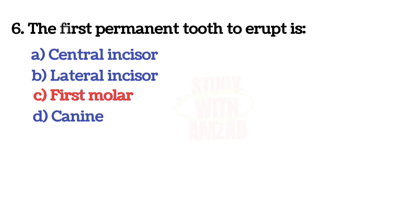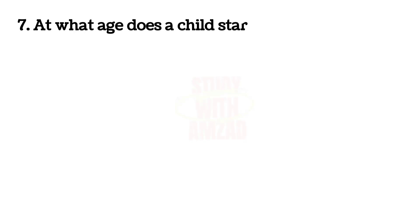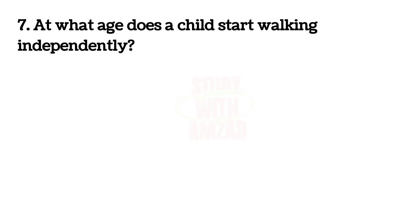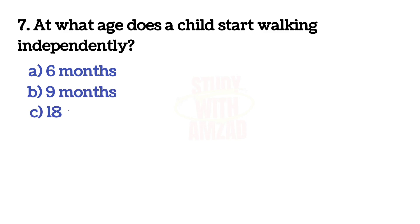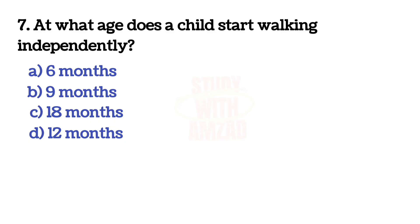Next question: At what age does a child start walking independently? The answer is C — twelve months.